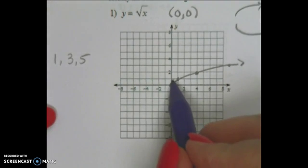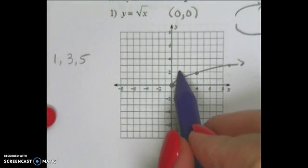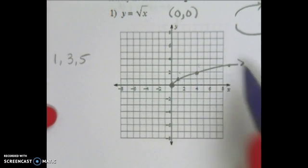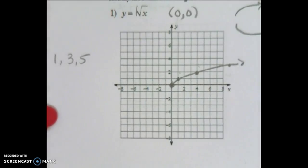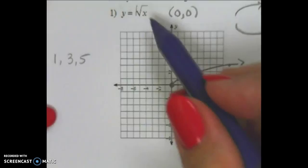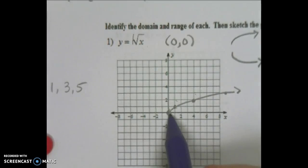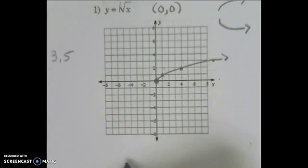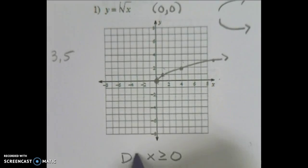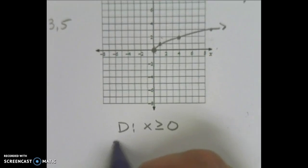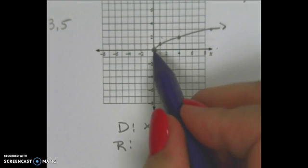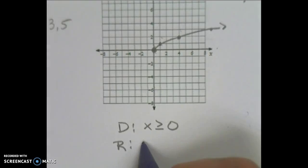My step function: I'm going to go up 1 and over 1, up 1 and over 3, up 1 and over 5, because there's a 1 in front of my equation. That's really all I have to do. It also tells you to identify your domain and range. My domain, or my x values — you'll notice this starts at 0 and goes to the right, so my domain is x is greater than or equal to 0. My range: I start at 0 and I am going up, so my range is y is greater than or equal to 0.